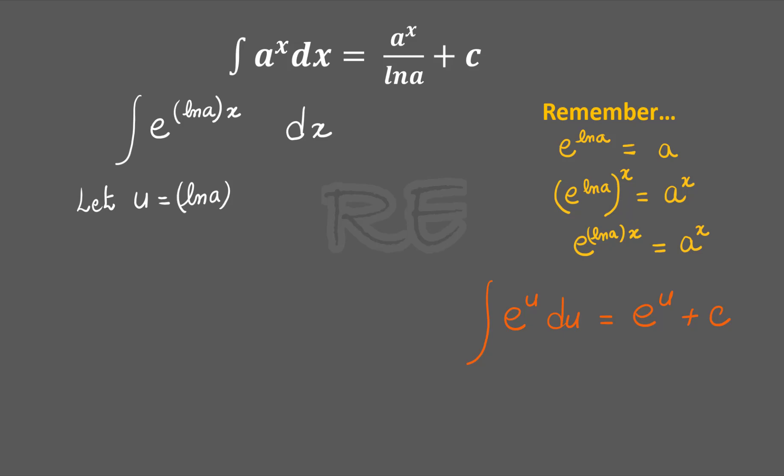Let u equal to ln a times x. du/dx will be, well ln a is a constant, so it's ln a times the derivative of x which is just one, so it's just ln a. And du when we cross multiply will be ln a times dx.